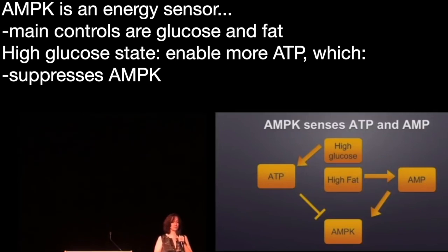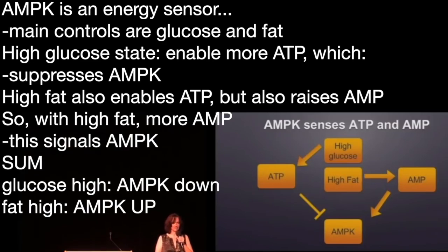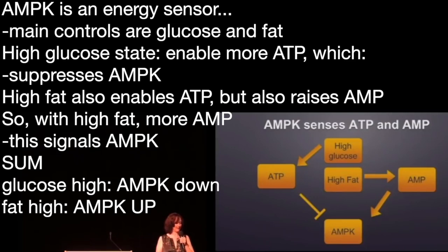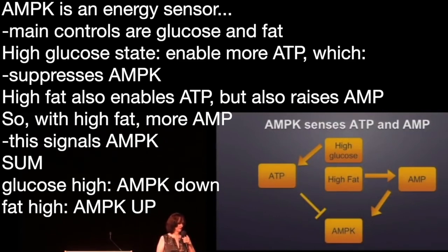The main controls for that have to do with glucose and fat. When you're in a high-glucose state, this enables you to make a lot of ATP, which suppresses AMPK. High fat also allows you to make a lot of ATP, but there's another important factor: the more circulating fat you have, the more it raises AMP through a different pathway. So in balance, you'll have more AMP relative to ATP, and that's the signal AMPK is looking for.